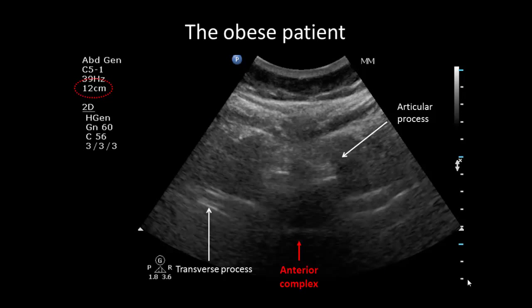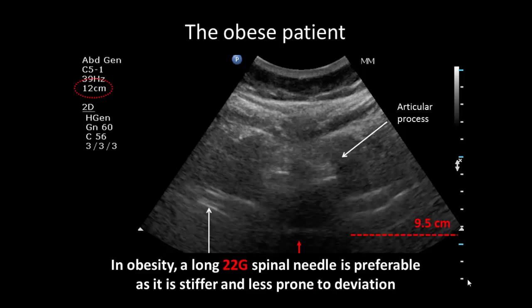Note that in obese patients, a longer needle may sometimes be required, and the need for this can be determined by estimating the depth to the vertebral canal from the depth markings on the screen or measured using electronic calipers. For spinal anesthesia, a 22-gauge needle is sometimes preferable in obese patients as it is stiffer and less likely to deviate from its intended trajectory.